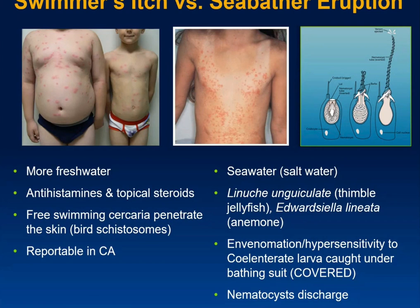Swimmer's itch is caused by bird schistosomes in freshwater lakes. These bird schistosomes enter the skin looking to complete their replication cycle in a bird. Since you are not a bird, all you get is a pruritic rash. There's not much to do except let it run its course — antihistamines and topical steroids.